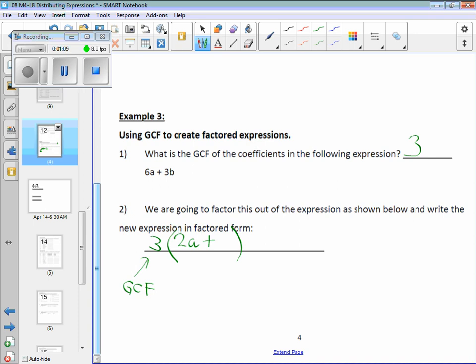3 times what makes 3B? 1B. But what did I teach you about the coefficient 1 and a variable? Do we need it? No. We don't. We just put B.